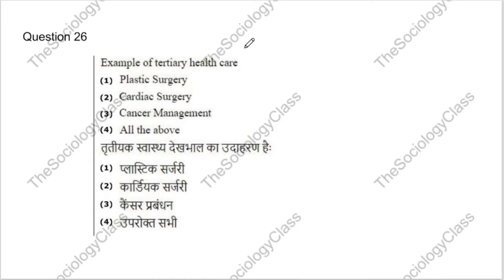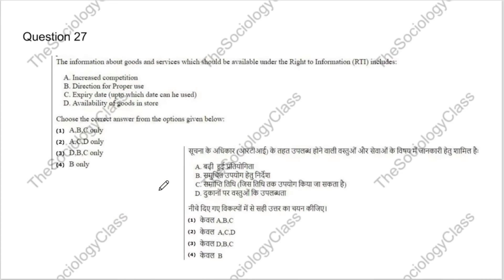Question 26: Example of tertiary health care — plastic surgery, cardiac surgery, cancer management, or all of the above? The correct answer is D — all of the above. Question 27: Information about goods and services available under right to information includes direction for proper use, expiry date, and availability. The correct answer is B — options A, C, and D. Direction for proper use is not part of RTI.